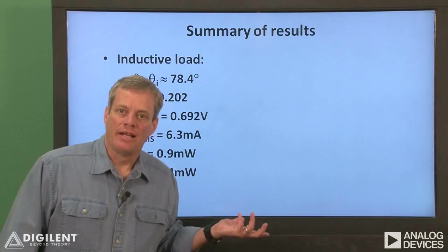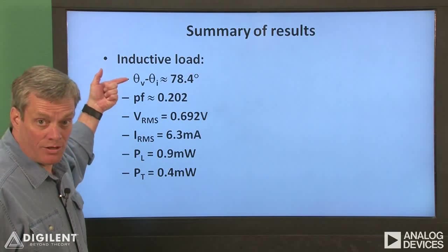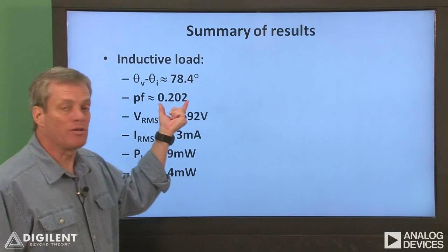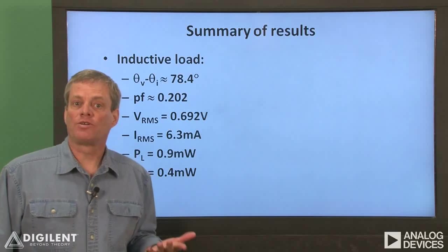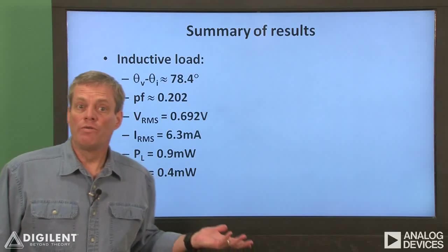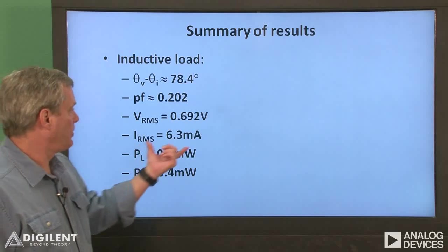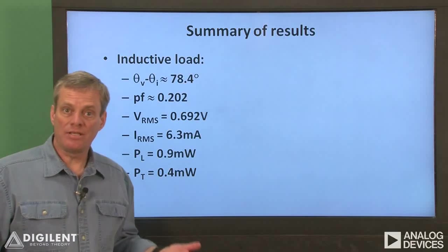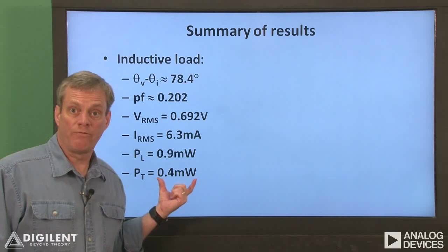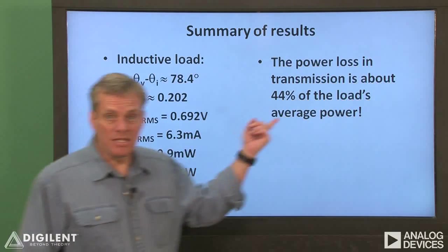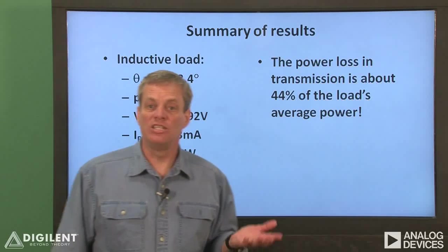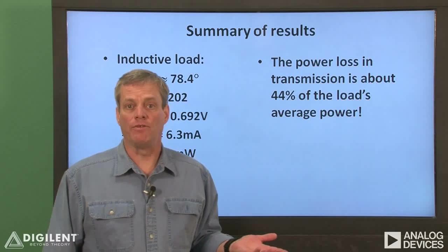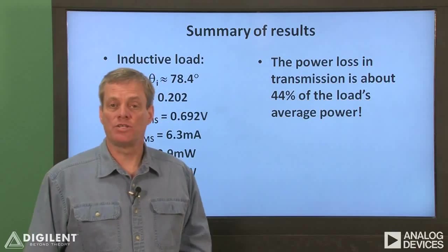Here's a summary of the results of our data analysis. Our phase difference between the load voltage and the current is a whopping 78.4 degrees which results in a power factor of only about 0.2. Using this power factor along with our measured load voltage and current results in an average power delivered to the load of about 0.9 milliwatts. The power dissipated by the transmission line resistance is pretty big compared to the load power, about 0.4 milliwatts. Ultimately for this case it turns out that the power dissipated just in transmitting power to the load is about 44% of the power that the load uses. This is awful, so let's take a look at one way to make our power transmission more efficient.